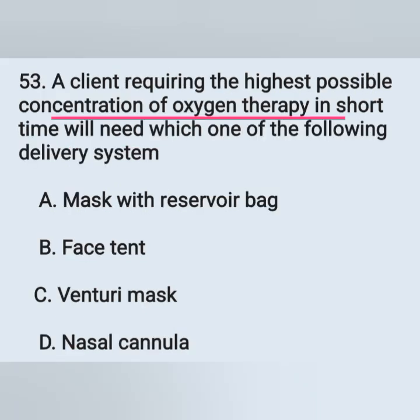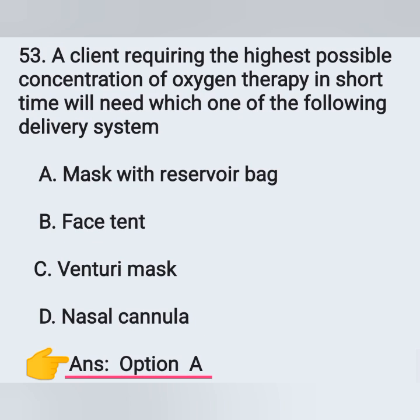Question 53: A client requiring the highest possible concentration of oxygen therapy in a short time will need which delivery system? Option A: Mask with reservoir bag, Option B: Face tent, Option C: Venturi mask, Option D: Nasal cannula. A patient needing the highest oxygen concentration in a short time should receive oxygen through a mask with a reservoir bag — Option A is the correct answer.